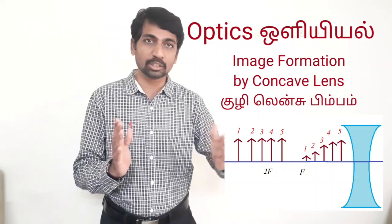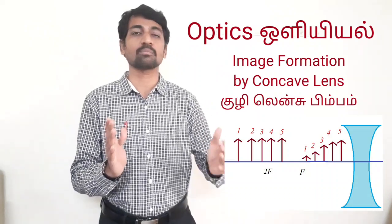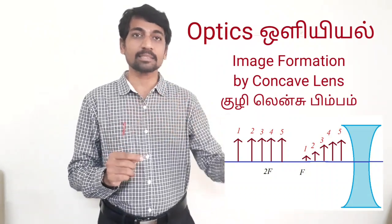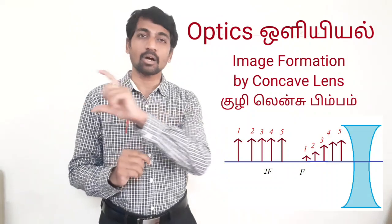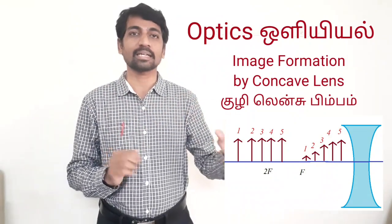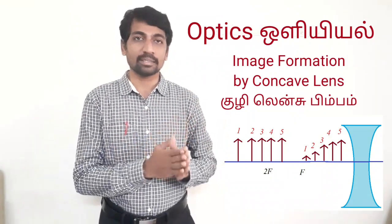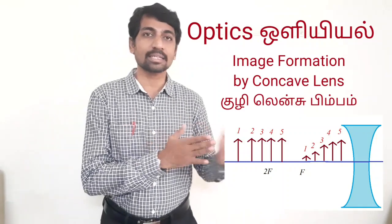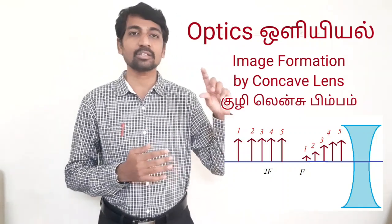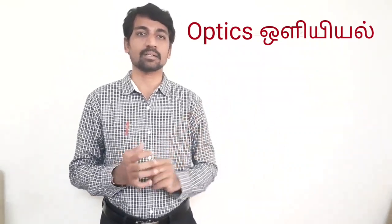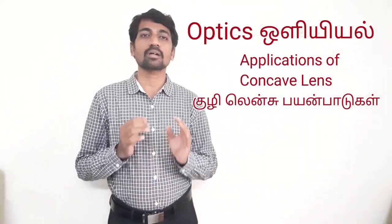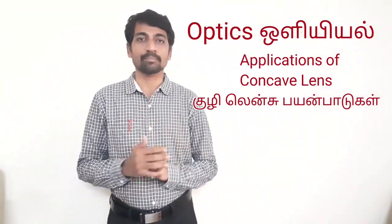The image formation is moving towards the lens. As the object moves closer — positions 1, 2, 3, 4, 5 — the image also moves towards the lens and the image size increases. These are the applications of concave lens.